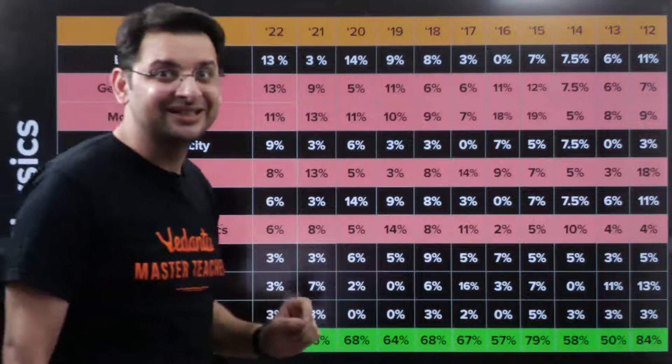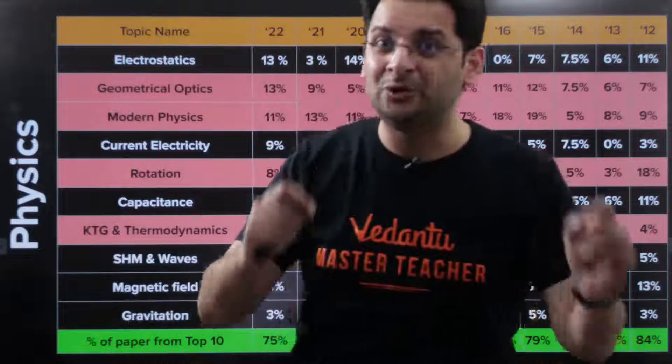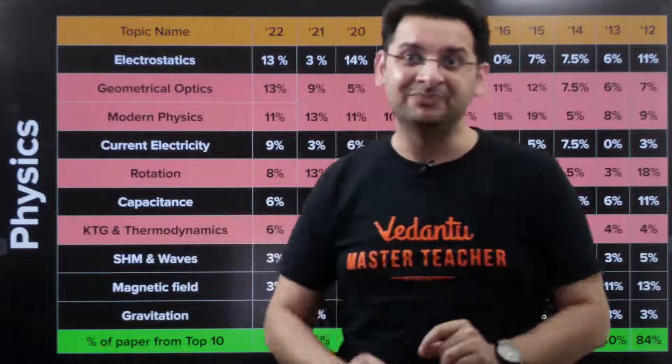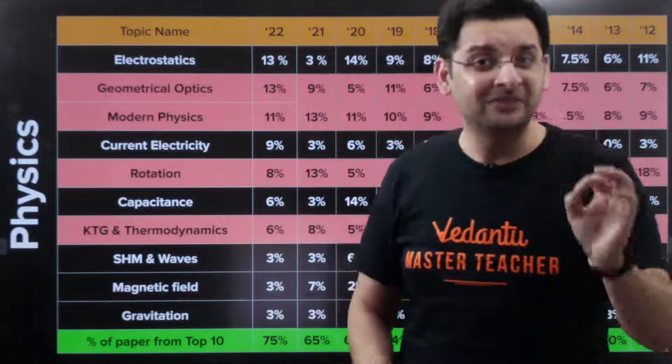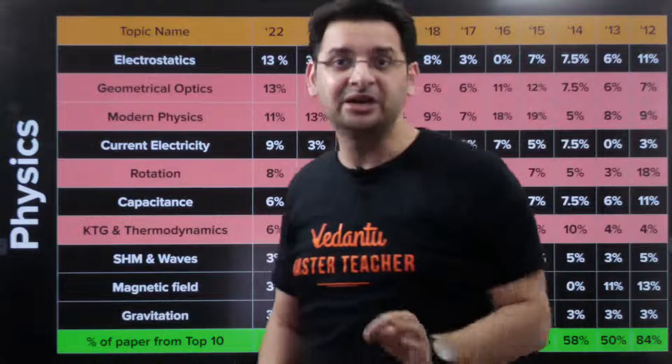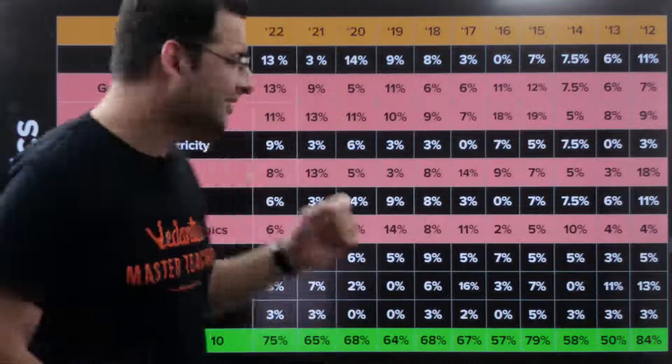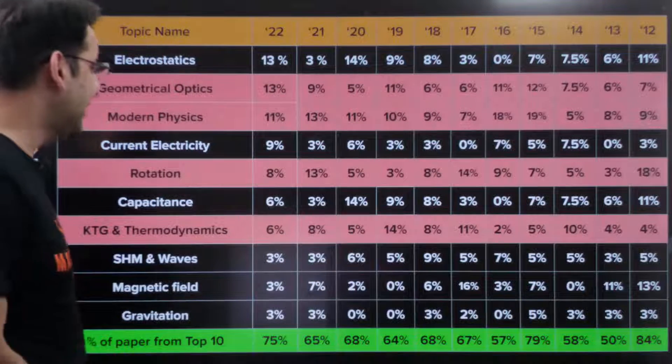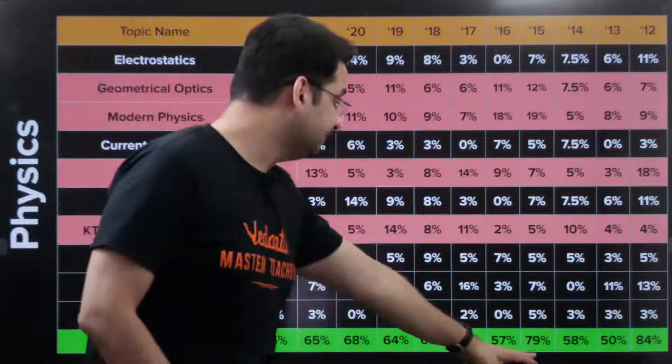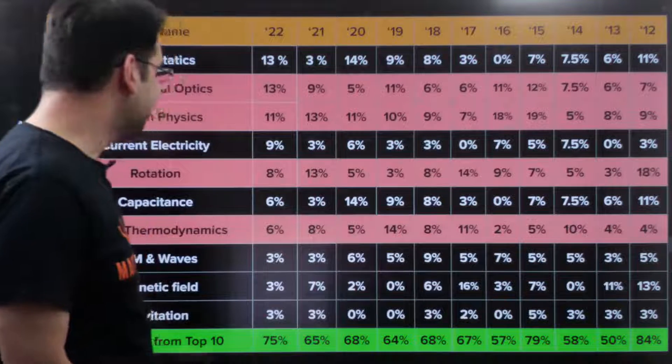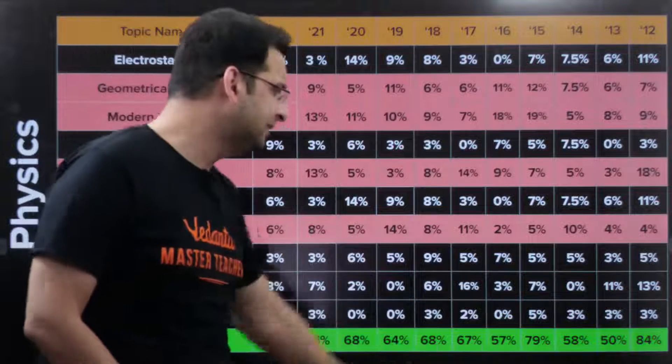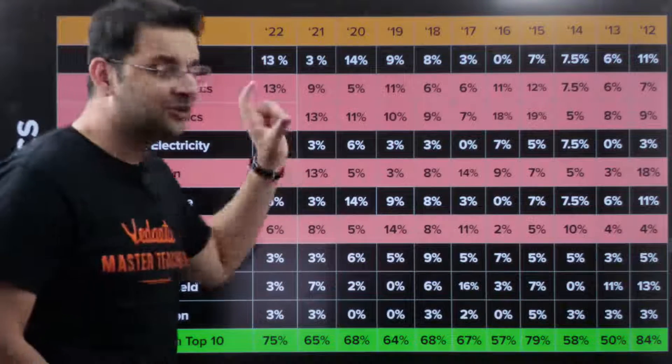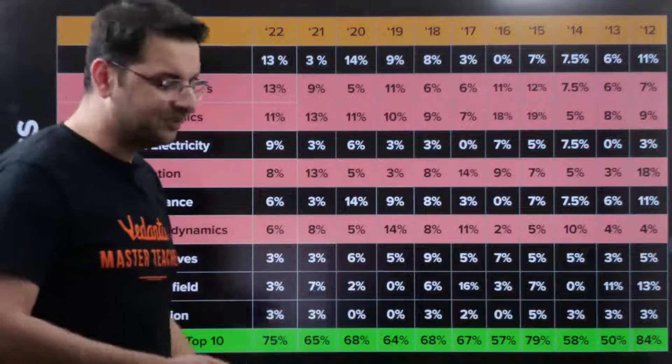Top 10 chapters have been contributing as high as 75% of the total paper in physics. This shows the kind of importance we need to pay in these chapters. We need to solve a lot of questions, start from the basics, and do previous year questions, particularly JEE Advanced of these topics. In 2015 it was 79% but most years it has always been crossing 50%. 10 chapters contributing 50% of the marks.